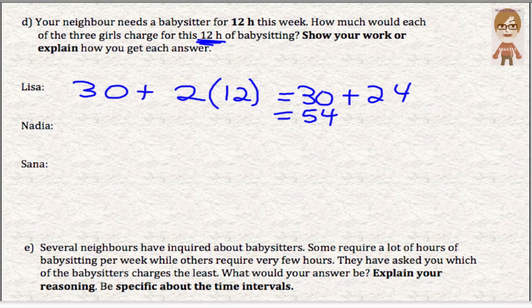Nadia, when we looked at her line, she makes $6 an hour. So Nadia, if 12 hours, 6 times 12, that's 72. So Nadia looks like she's going to charge more for 12 hours.